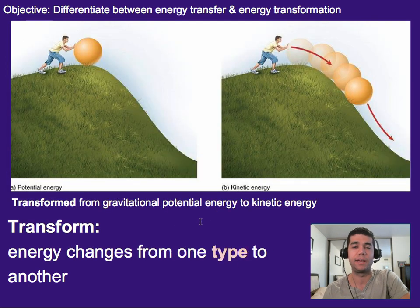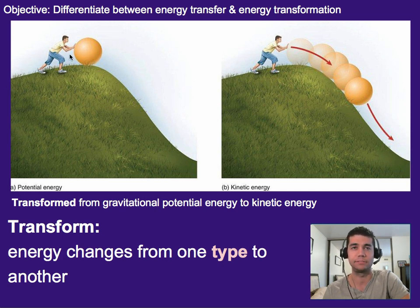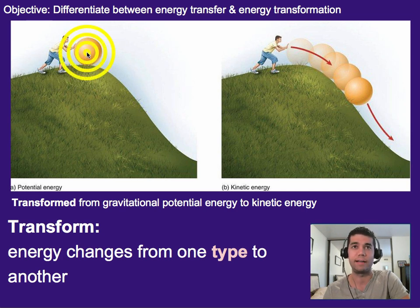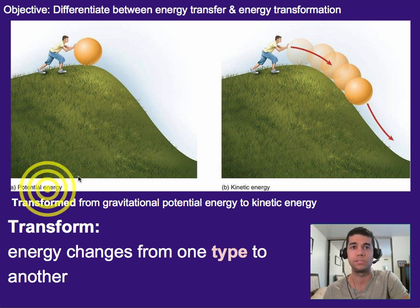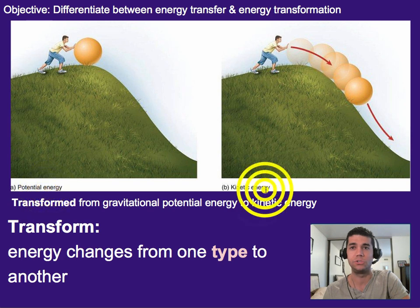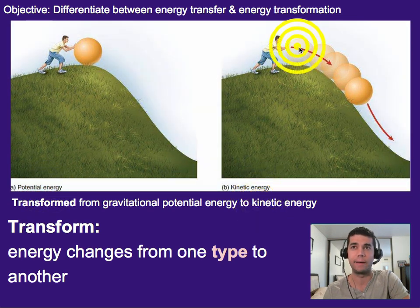On the other hand, we could have an energy transformation. That's where energy related to an object changes from one type to another — it's not being transferred somewhere else. The object is still maintaining certain levels of energy, but that energy is changing type. For example, gravity does work on a ball to pull it down a hill, and as a result it transforms potential energy into kinetic energy. As the ball begins to move, that potential energy turns into kinetic energy — that is what a transformation is.